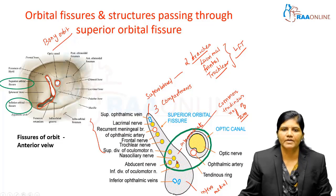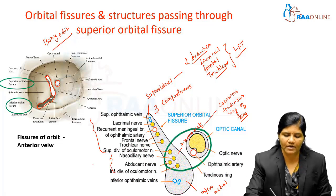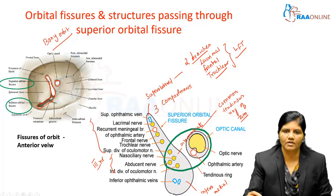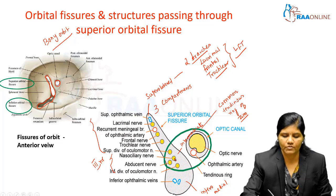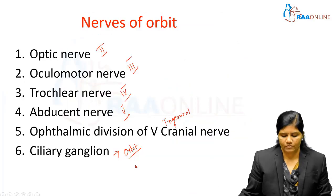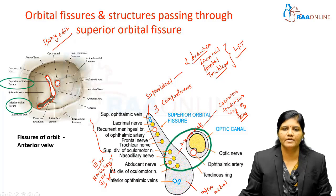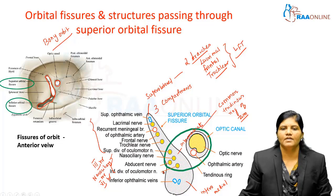The intermediate compartment transmits the superior and inferior divisions of the third nerve (oculomotor). In between the superior and inferior divisions is the nasociliary nerve, which is another branch of the ophthalmic nerve. Lateral to this is the sixth nerve, the abducent nerve. The infromedial compartment transmits the inferior ophthalmic vein.